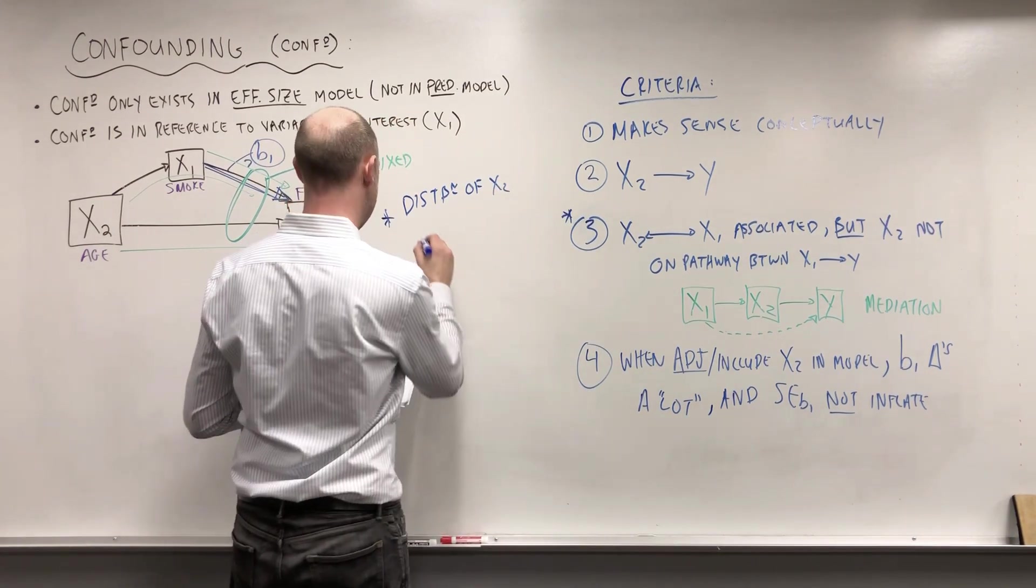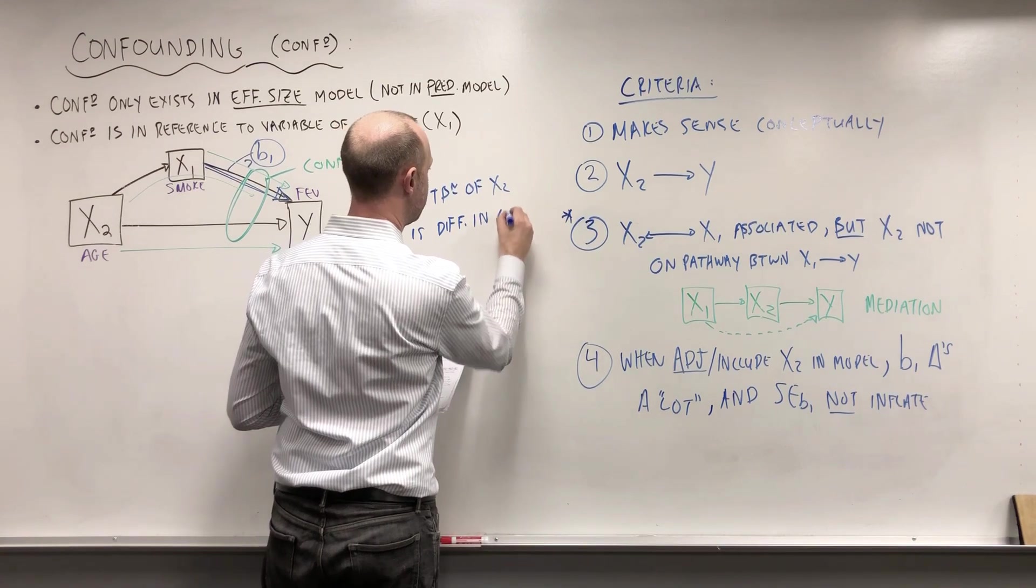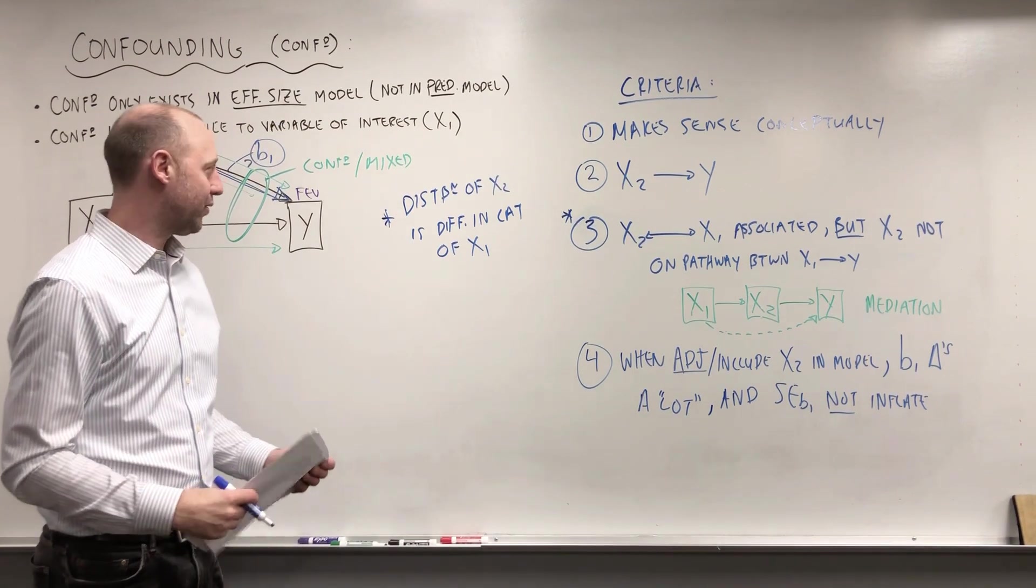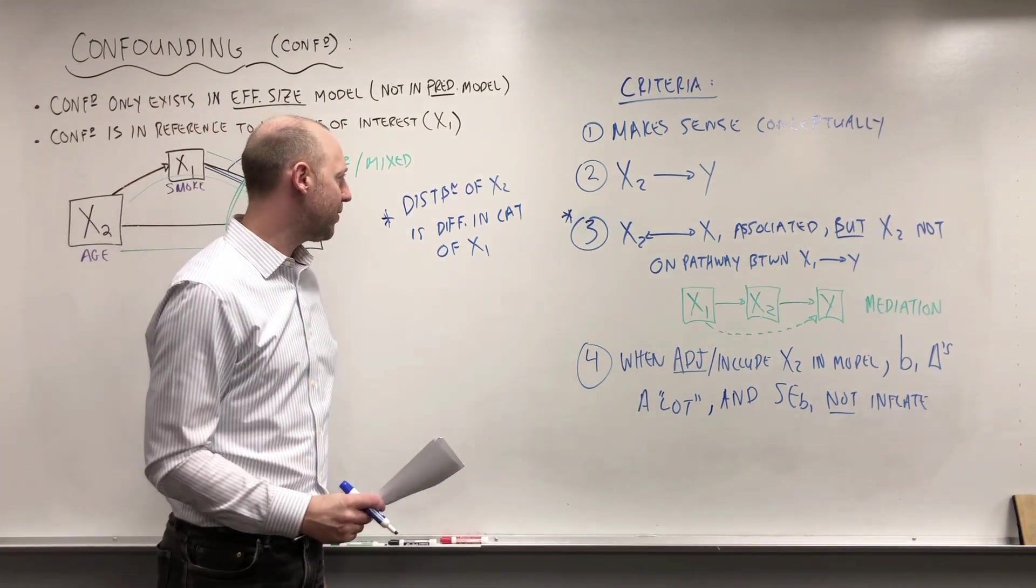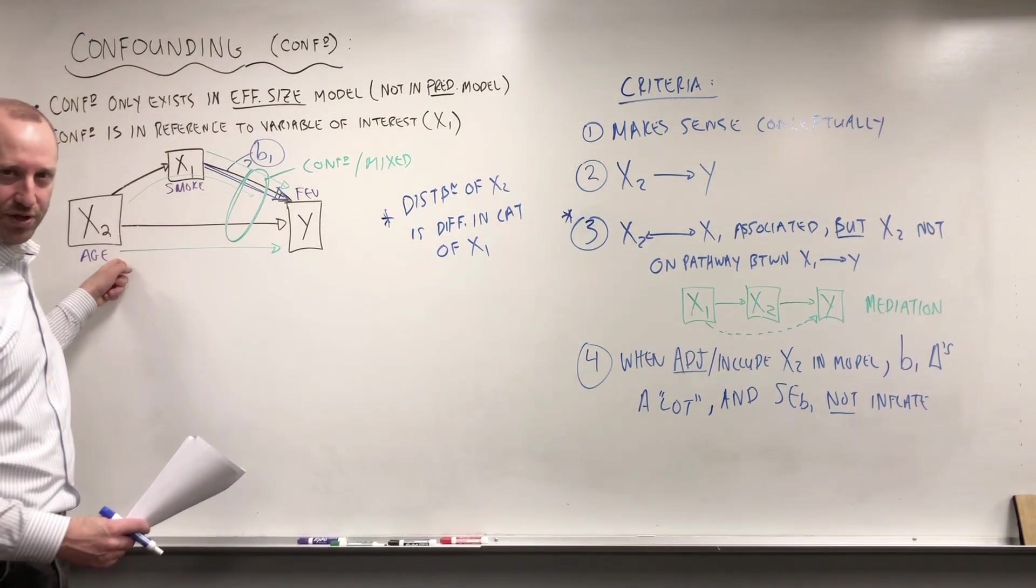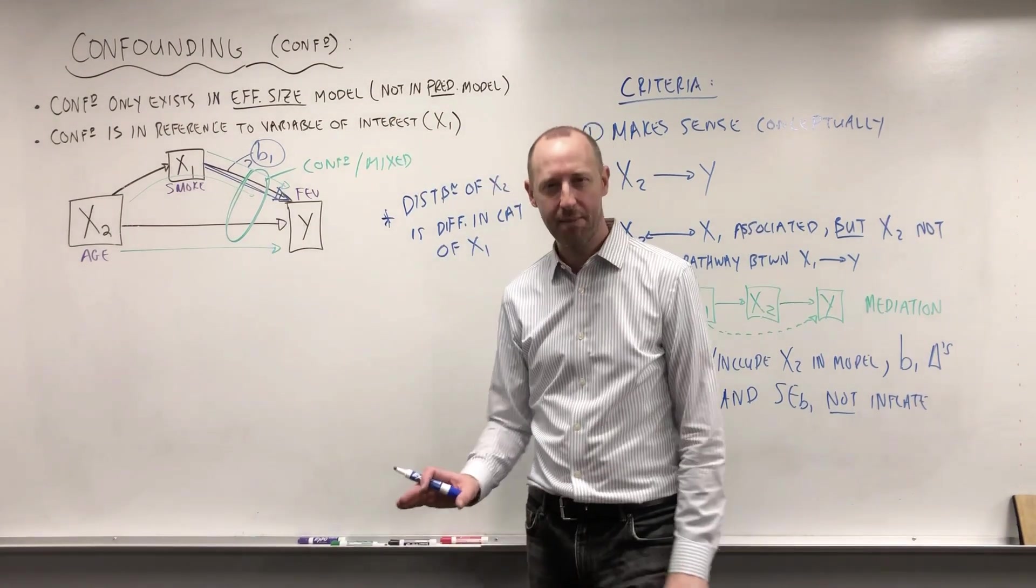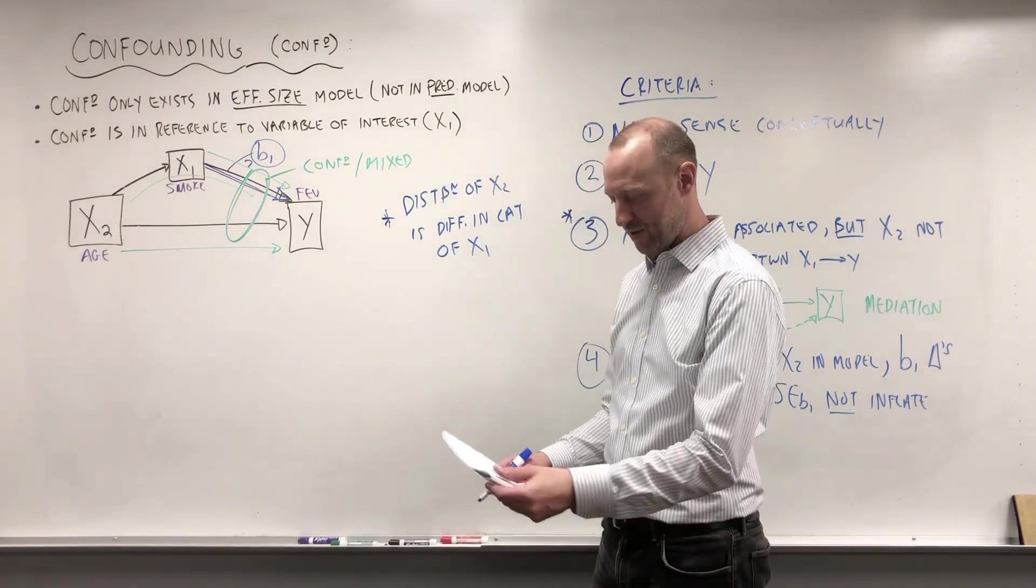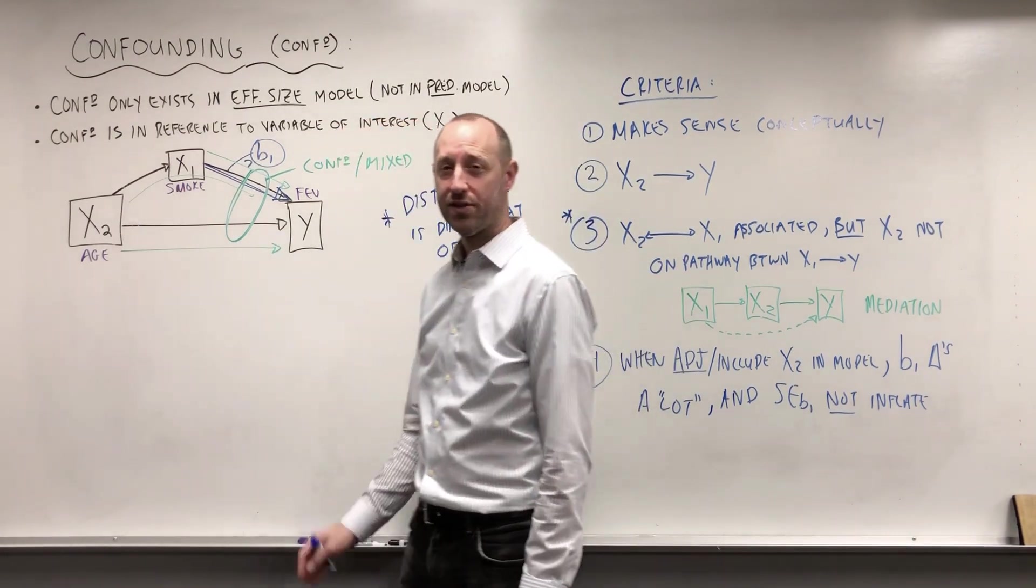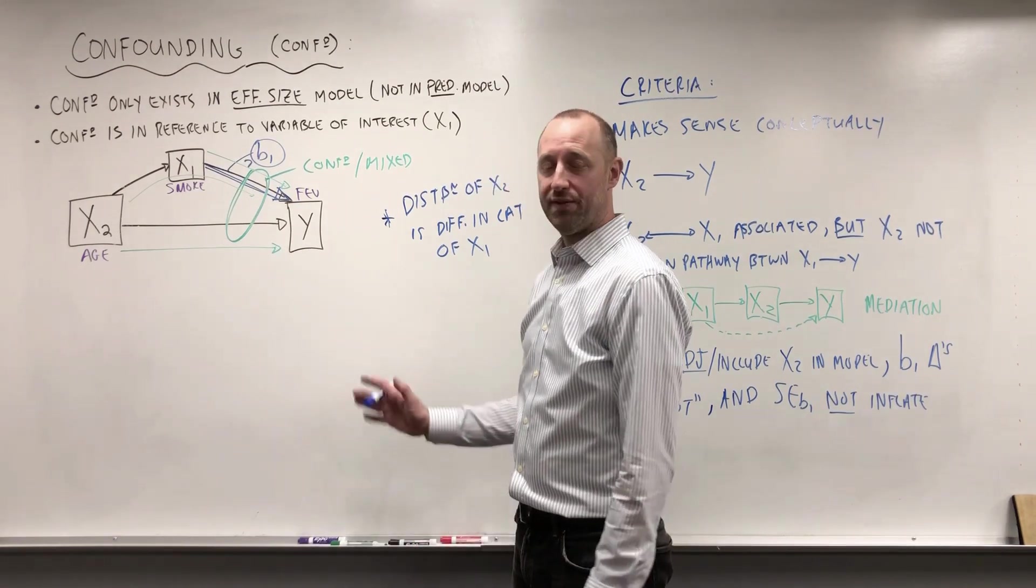One way we can think of confounding is that the distribution of X2 is different in the categories of X1. And this is assuming X1 is categorical. So that's one way of thinking they're associated. Is the age distribution different for smokers and non-smokers? We can check that with side-by-side box plots or other methods. So knowing which variables are potentially confounders can come from previous studies, previous knowledge, also knowledge of study design.